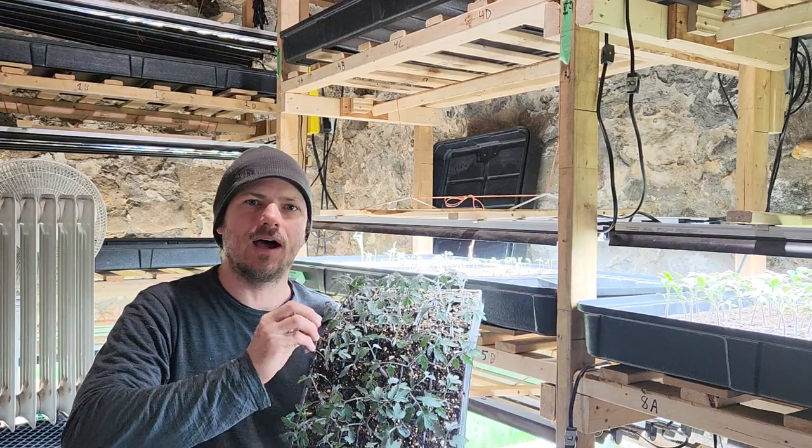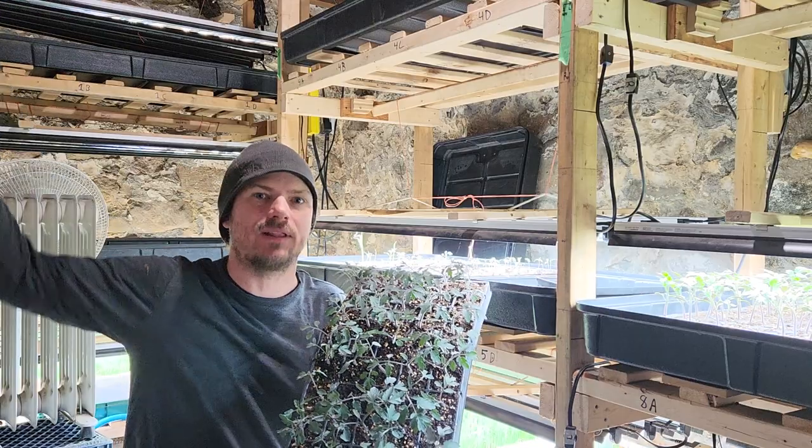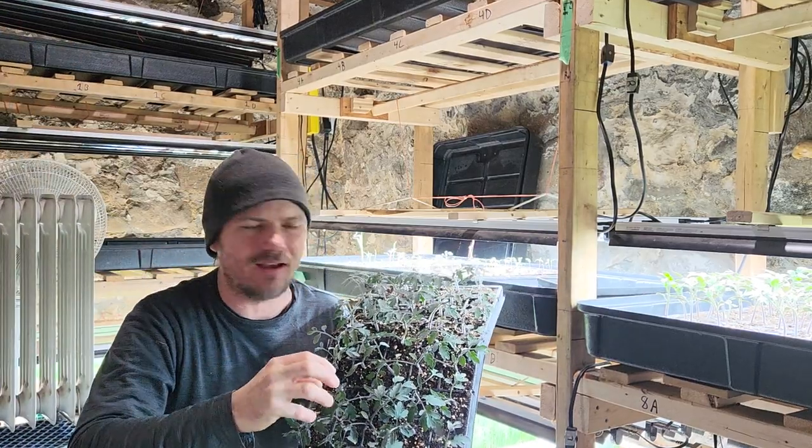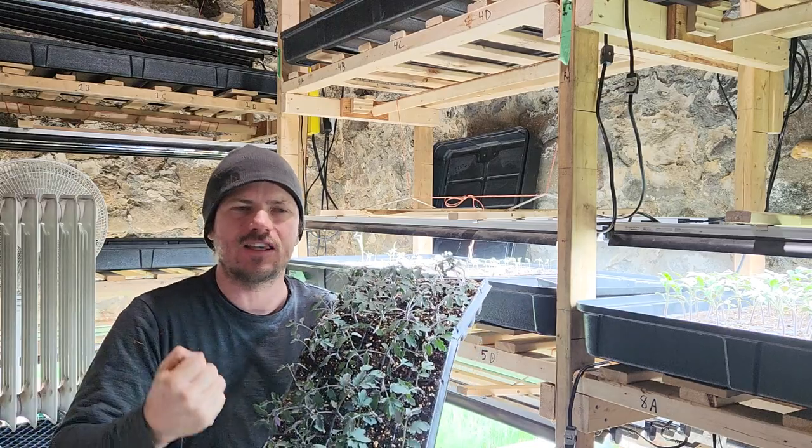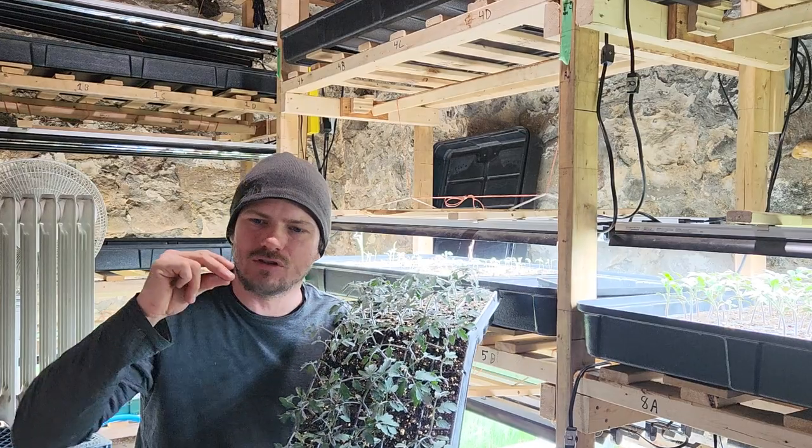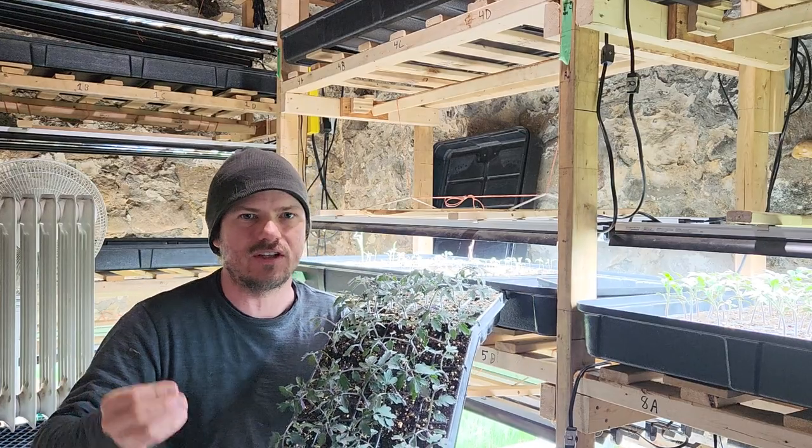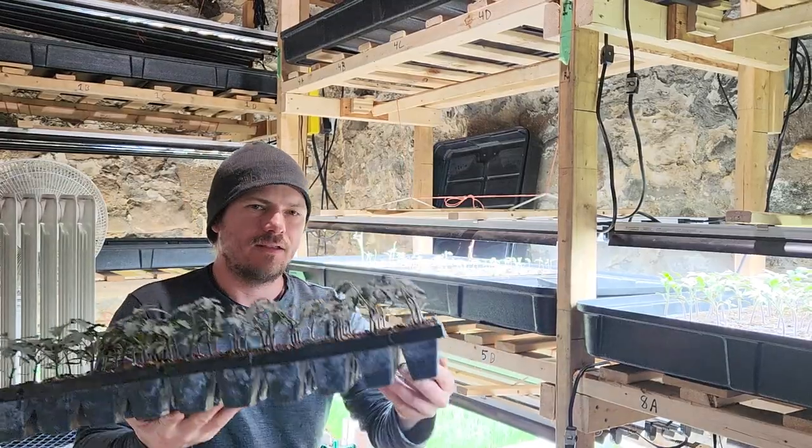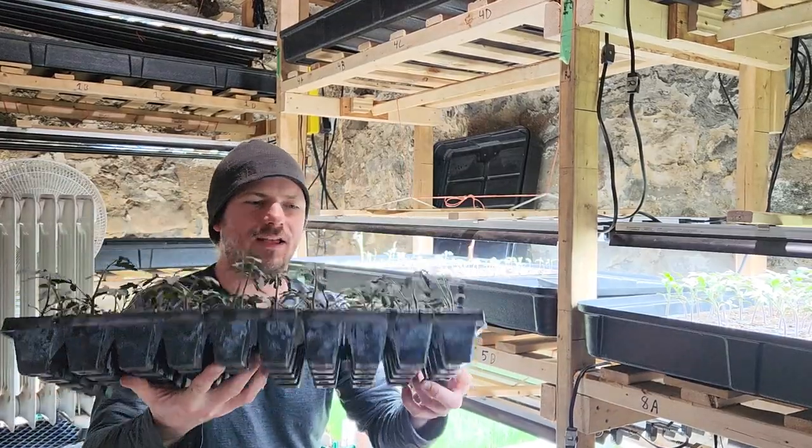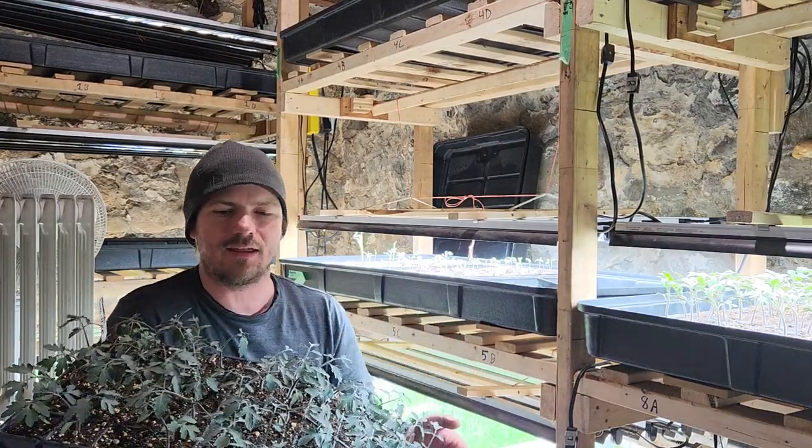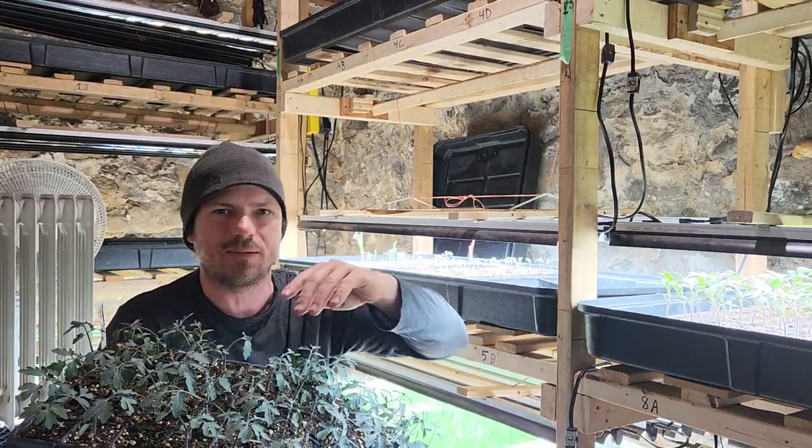What you do not want is a tall, leggy plant stretching out for light, root bound in itself. You really want a short, stout, stocky plant that's going to be able to adjust well to the transition into the field. And so this is what's called a 50. So it's a tray that has 50 cells in it. You can grow tomatoes in fifties.